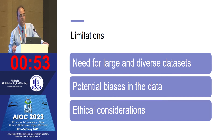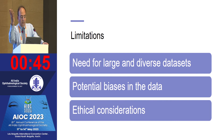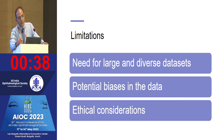AI has certain limitations: there is a need for large and diverse datasets, potential biases can be present in the data fed into the machine and those biases can be carried forward, and there are ethical considerations — for instance, if something goes wrong, it is unclear whether AI or the doctor will be held responsible.